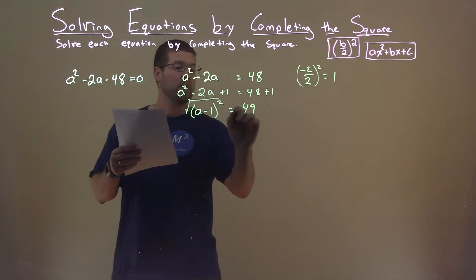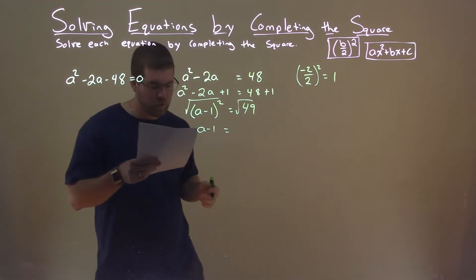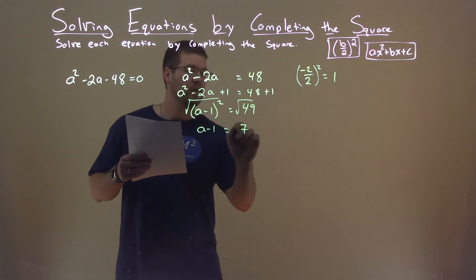We now can take the square root of both sides, and we have a minus 1 equals, well, the square root of 49 is 7, but that's plus or minus here.